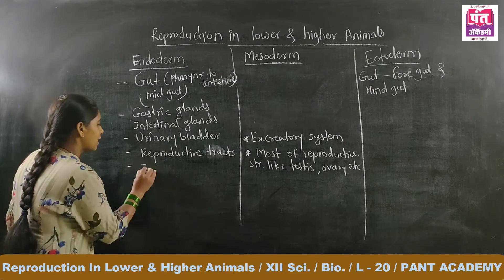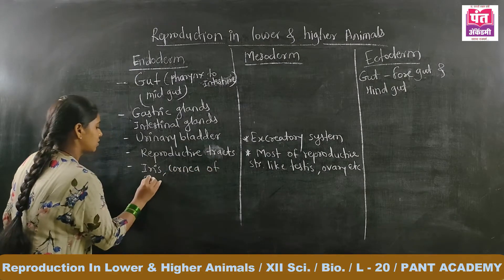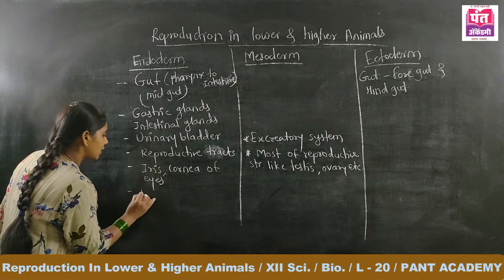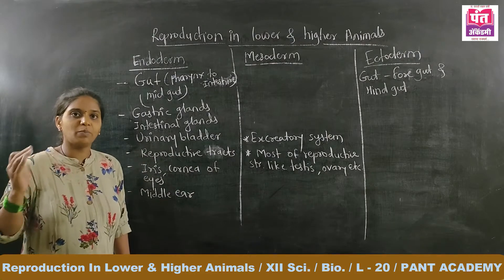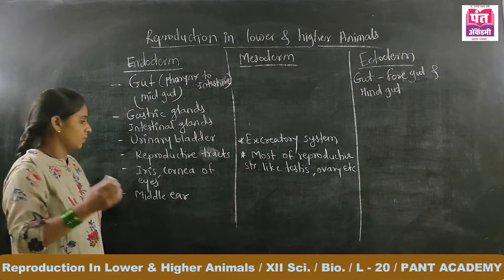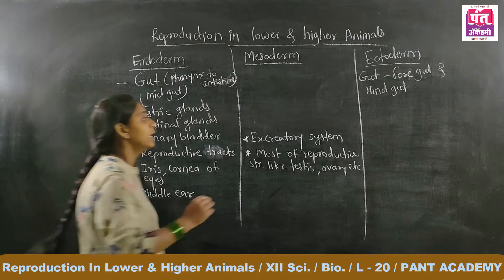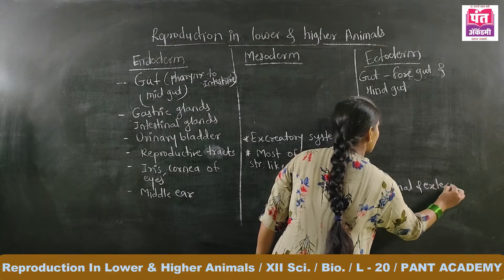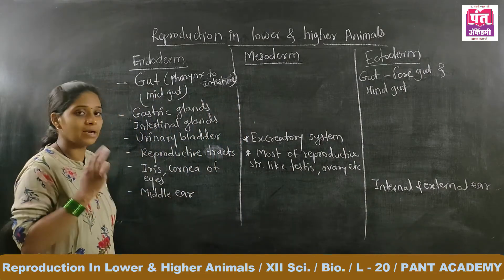Also under endoderm, parts of the eyes — specifically the iris and cornea — are made up of endoderm. The middle ear is also lined by endoderm. Our ear is divided into three portions: the external ear, middle ear, and internal ear. Out of these, the middle ear is lined by endoderm, while the internal and external ear are made up of ectoderm.